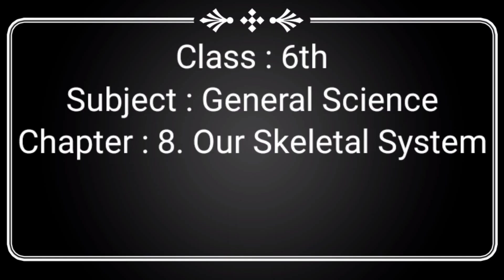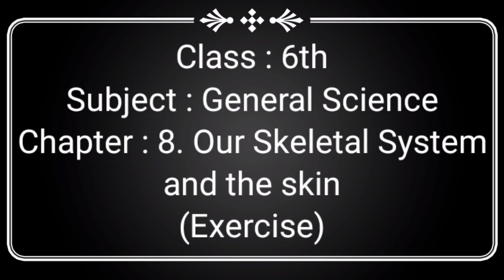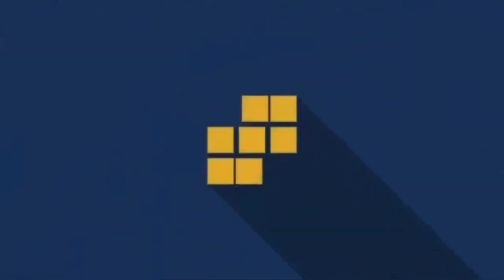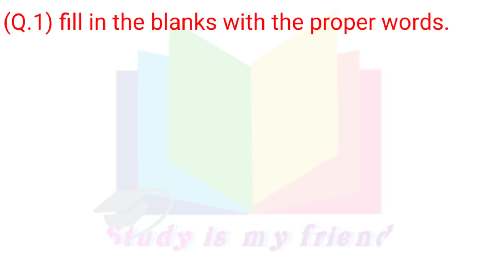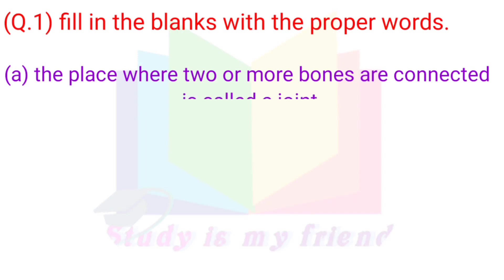Class 6th, Subject General Science, Chapter 8: Our Skeletal System and the Skin — Exercise. Question 1: Fill in the blanks with the proper words. A. The place where two or more bones are connected is called a joint.